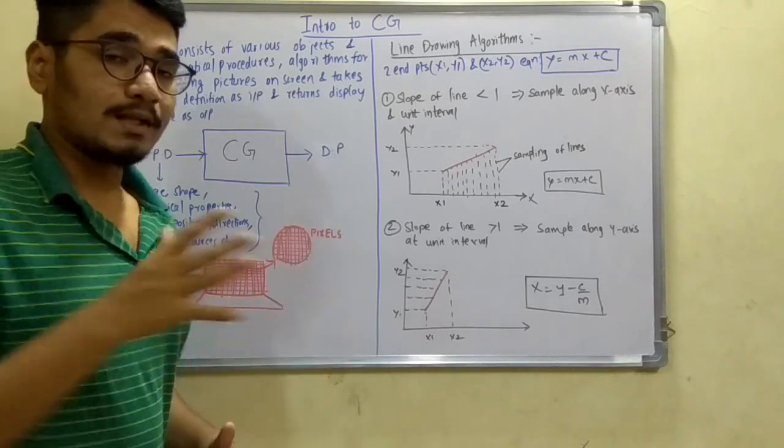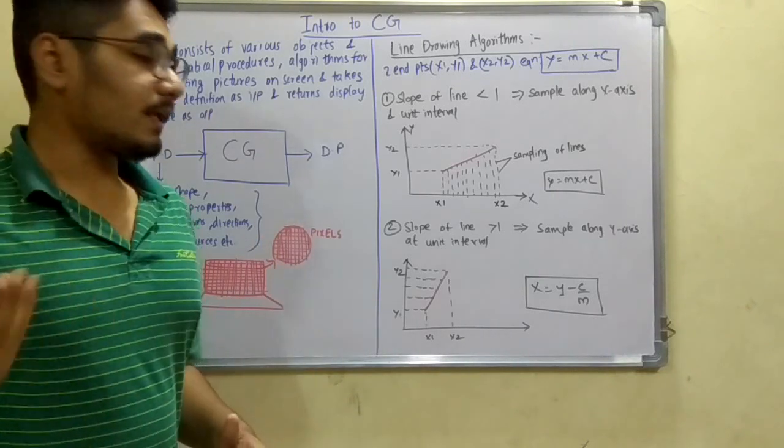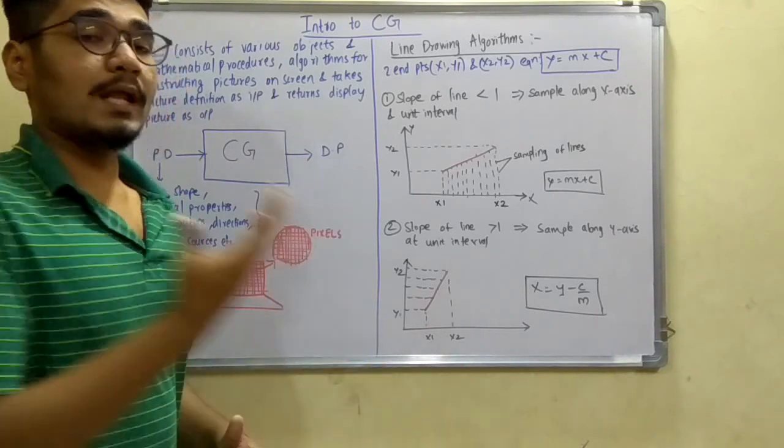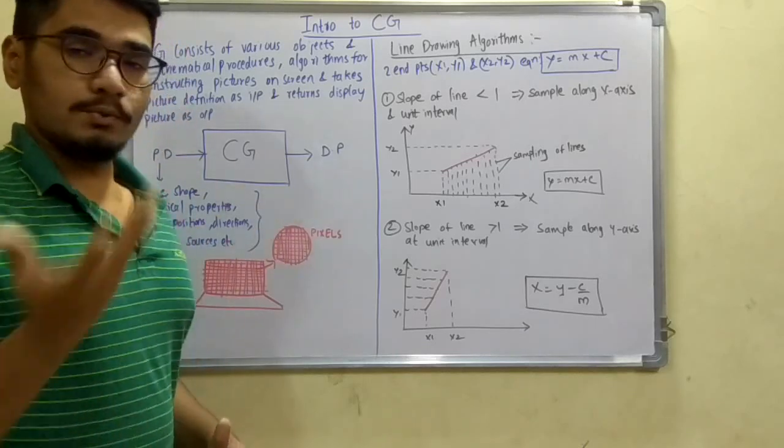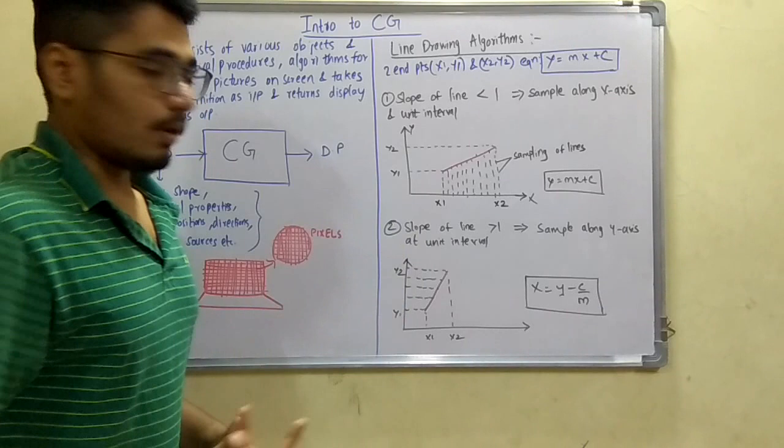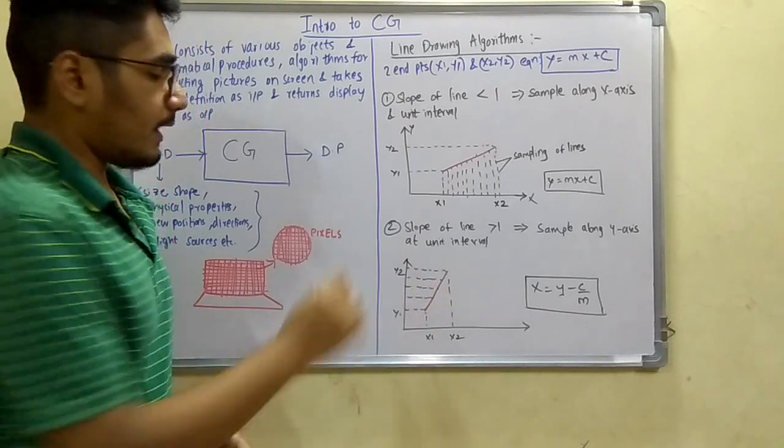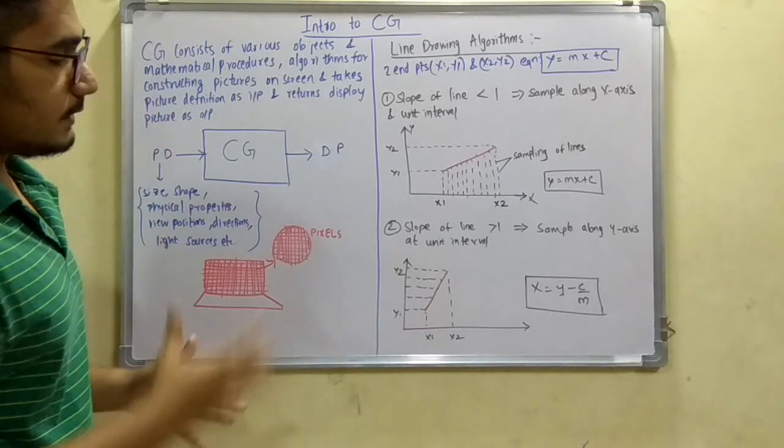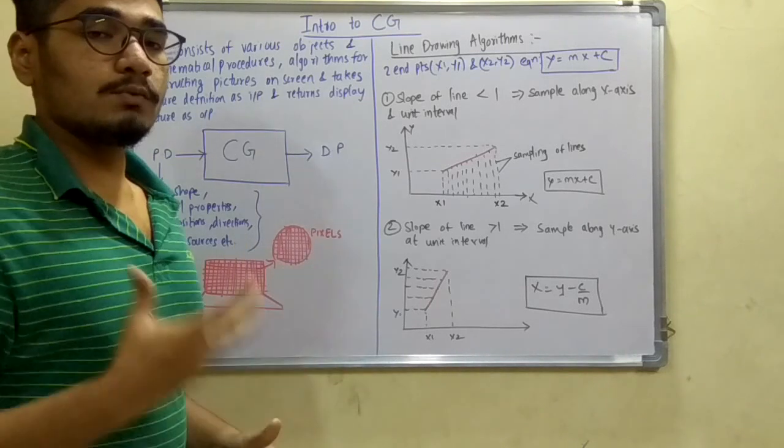The second case is when the slope of the line is greater than one, then we have to sample along the y-axis at unit intervals. This diagram is similar to above with x1, x2 and y1, y2.